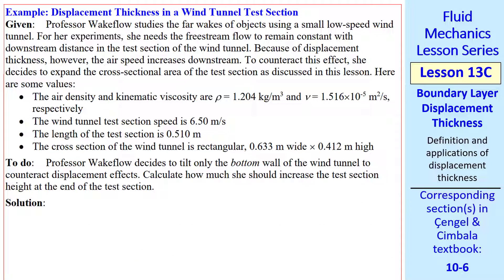Let's do another example. This one involves a wind tunnel like I discussed. Professor Wakeflow studies the far wakes of objects using a small wind tunnel. For her experiment, she needs the freestream flow to remain constant with downstream distance. But due to displacement effects, the airspeed increases downstream as we discussed. So she decides to expand the cross-sectional area of the test section as we discussed above. Here are some values of air density, kinematic viscosity, test section speed, length of the test section, the width of the test section, and the height of the test section. Professor Wakeflow decides to tilt only the bottom wall of the wind tunnel. We are to calculate how much she should increase the test section height at the end of the test section.